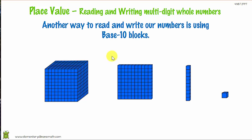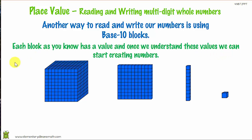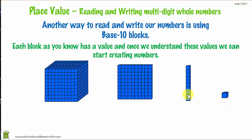We can also read and write our number using base 10 blocks. Each block, as you know, has a value, and once we understand these values we can create numbers. We need to start with the smallest one — it's called a ones. Usually you only have one to nine in the ones column, but we know to make a long we need 10 ones.